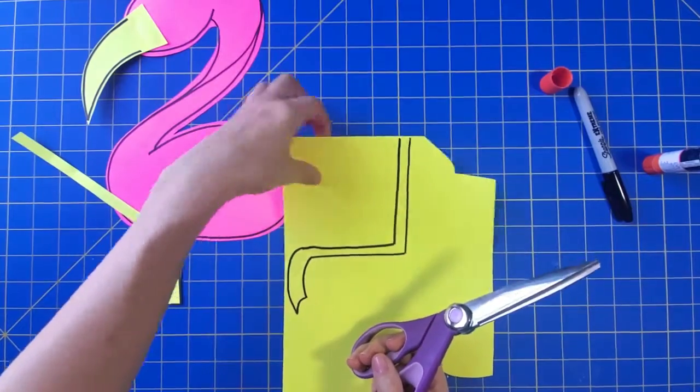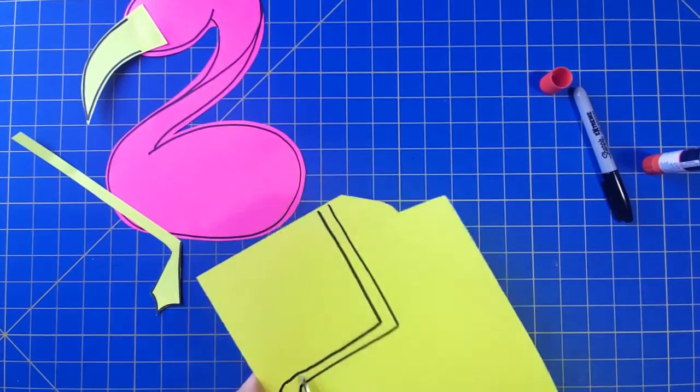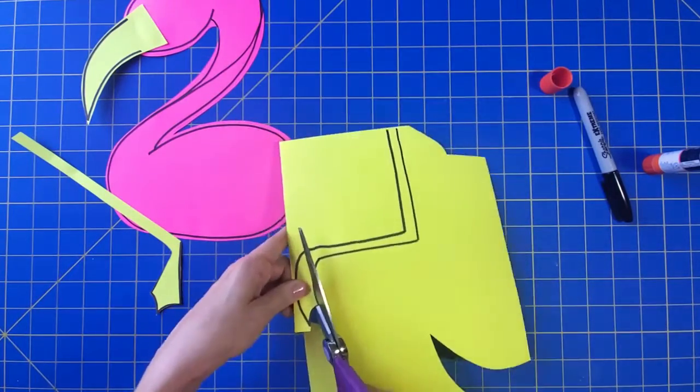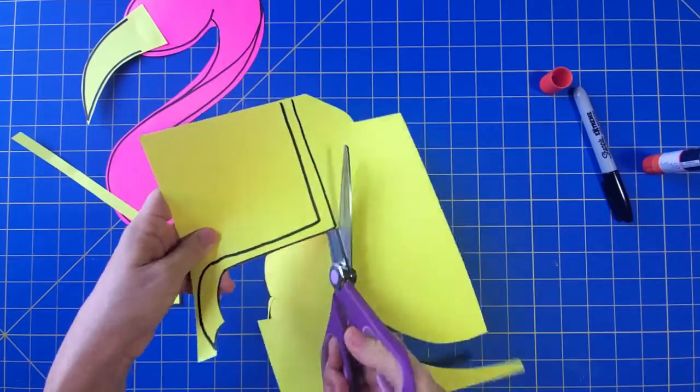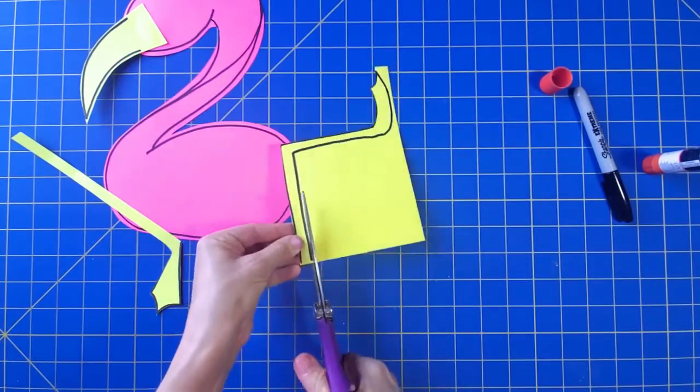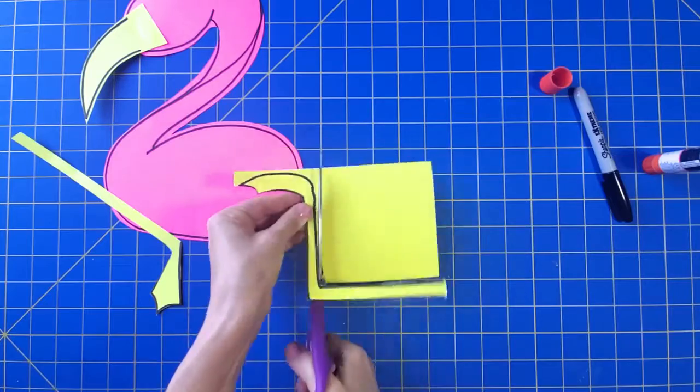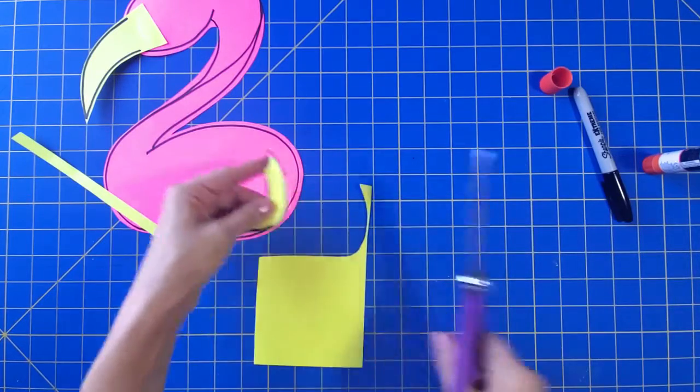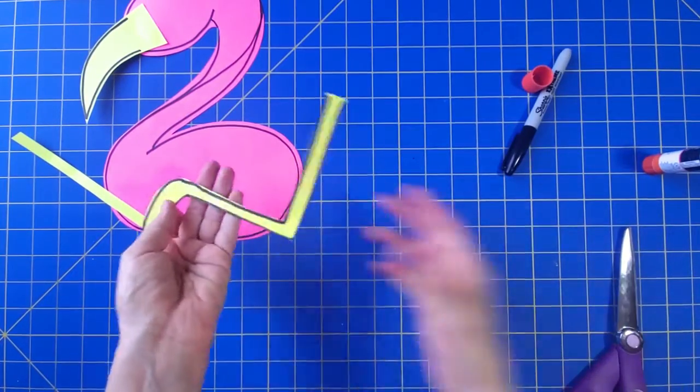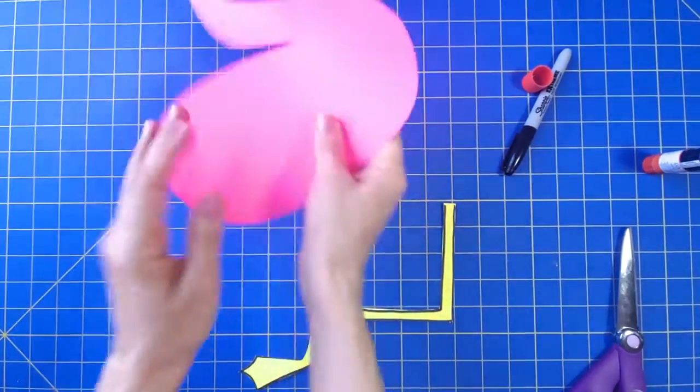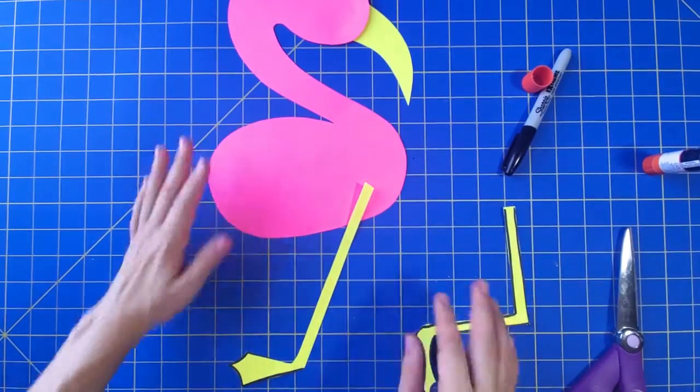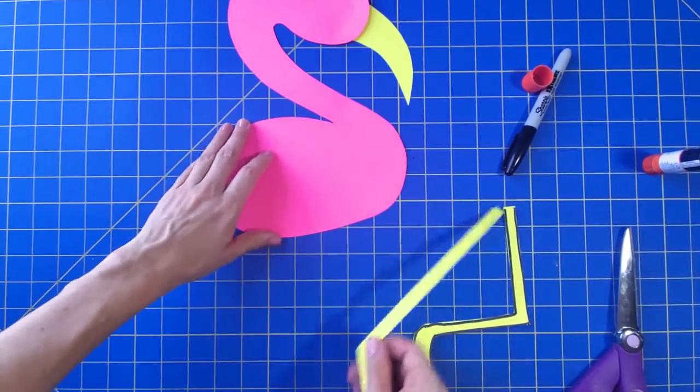When you have it drawn, you can go ahead and cut it out. Then I'm going to flip everything over to see how it looks—don't want to see those messy lines.